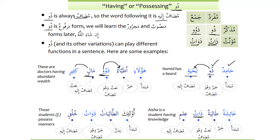For the feminine, we use dhatu: A'ishatu talibatun dhatu ilmin — A'isha is a student having knowledge. A'ishatu is mubtadaun, talibatun is khabarun, dhatu is naatun wa huwa mudaafun, and ilmin is mudaf ilayhi. When dhatu follows a plural feminine noun, dhatu is also plural and marfoo'. For example: ulaika talibatun dhatu khuluqin — those are students of good character.